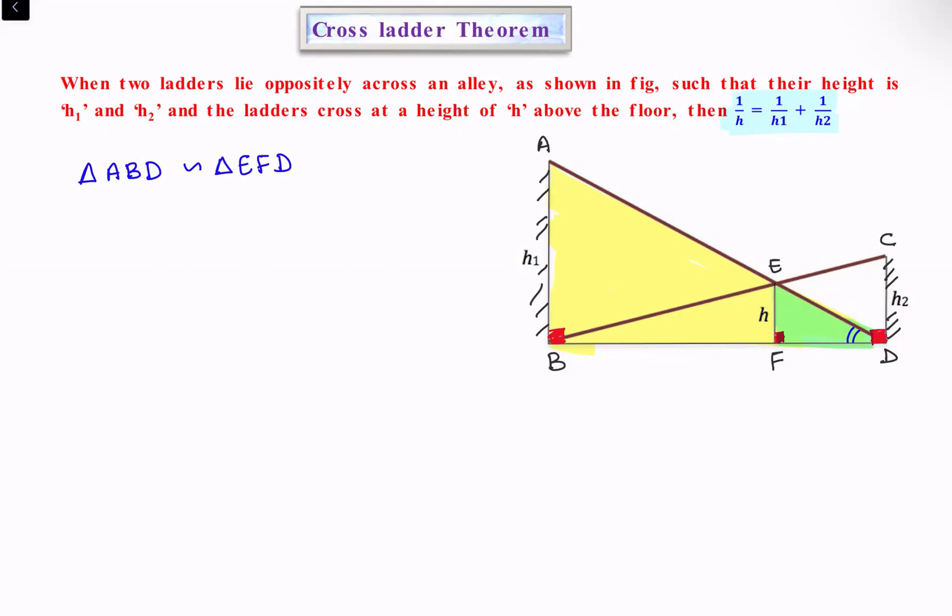Since the triangles are similar, the ratio of sides will be equal. Comparing the sides, we take BD/FD, which equals AB/EF. But AB is h1 and EF is h, so this equals h1/h. This is observation number one.